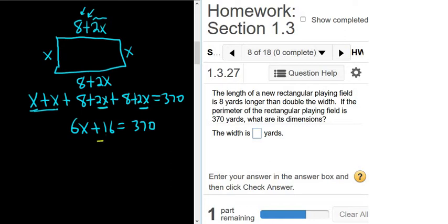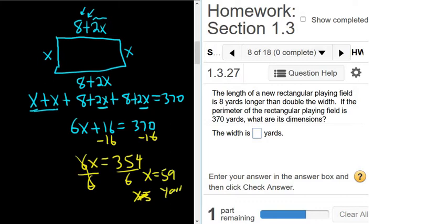So if we subtract 16 from both sides, we end up with 6x equals, and 370 minus 16 ends up being 354. And I used a calculator for that, if you're curious. And then divide by 6. And so we get 354 divided by 6. So x is equal to 59. So x is 59. And the units are yards. So that would be the width.